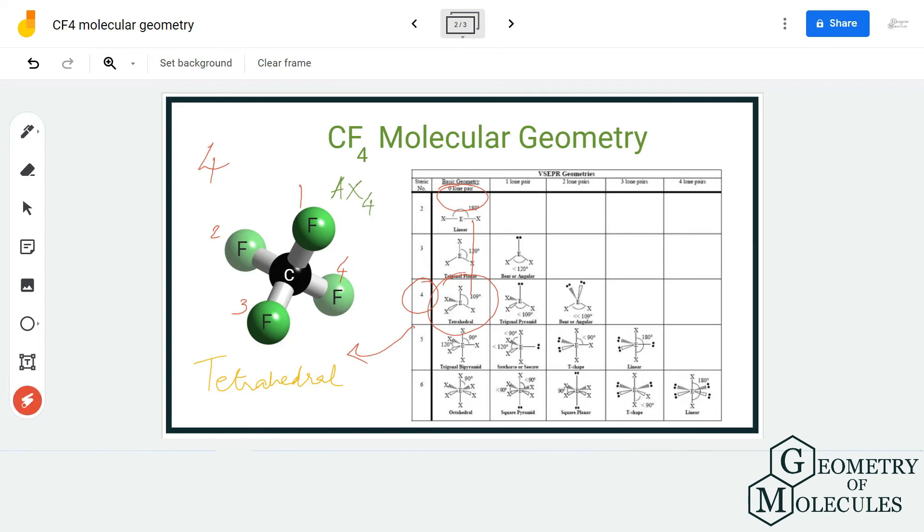Here, four fluorine atoms are forming bonds with the carbon atom and there are zero lone pairs. The AXN notation will be AX4, and hence you'll also get the molecular geometry as tetrahedral if you refer to that table.